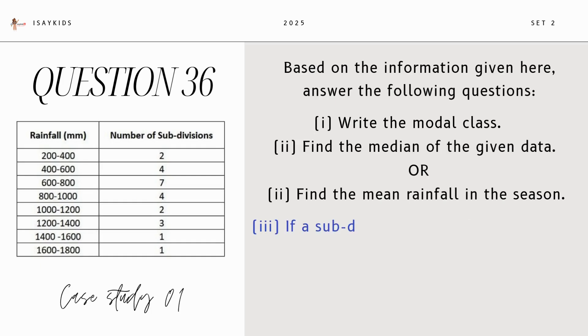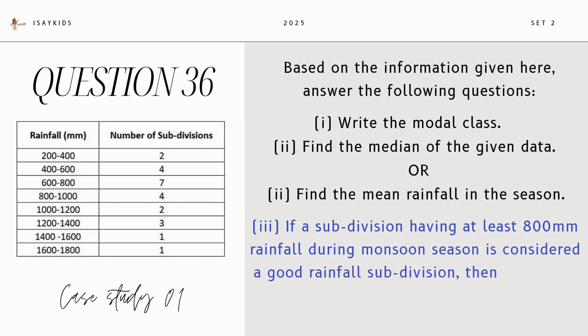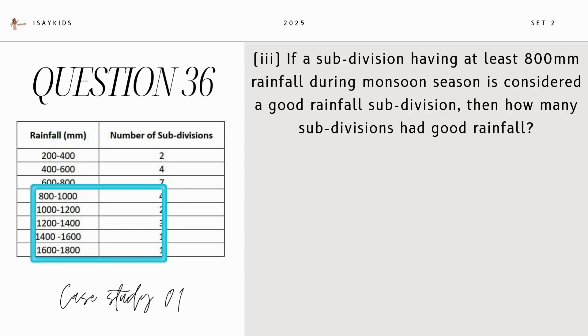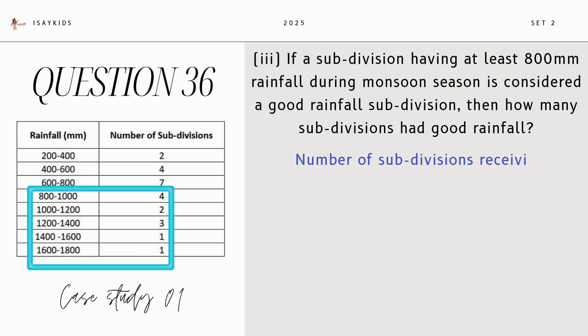Last part is, if a subdivision having at least 800 mm rainfall during monsoon season is considered a good rainfall subdivision, then how many subdivisions had good rainfall? Well, such subdivisions would be the ones that receive rainfall equal to 800 mm or above it. So, total number would be the sum of frequencies which is 11.